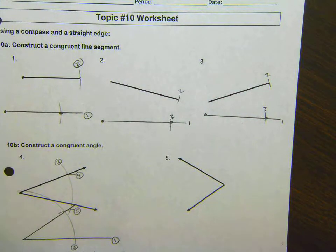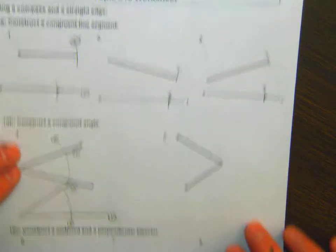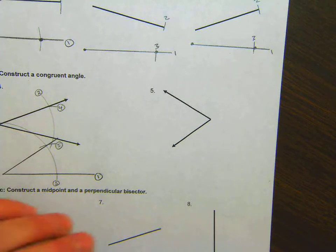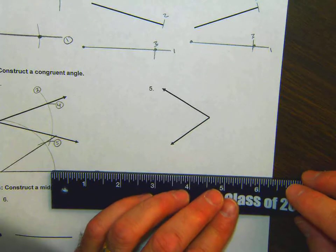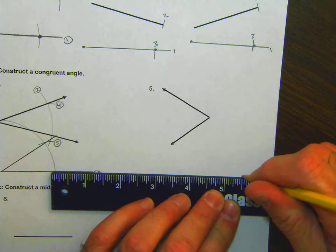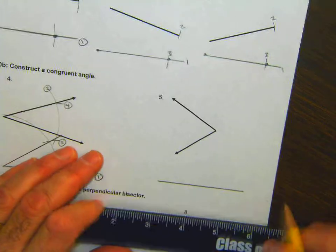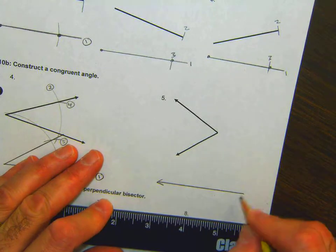Topic 10 number 5, we'll get resumed here. What I might do is go like this. Here's my ray I'm going to copy it onto, and here's my endpoint.